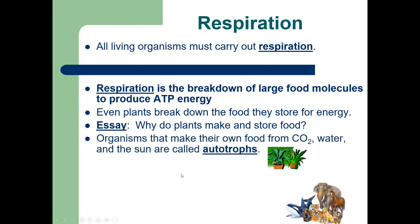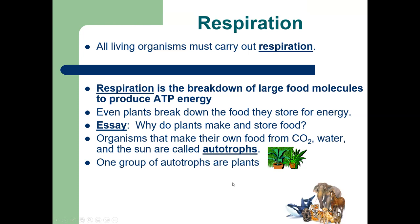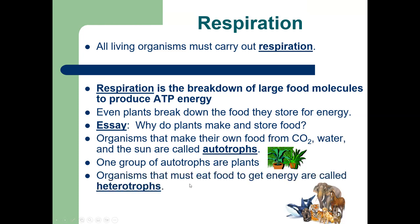Organisms that make their own food from CO2, water, and sunlight are called autotrophs. 'Auto' means self, 'troph' means feeder — they feed themselves. One group of autotrophs are plants; there are also some photosynthetic bacteria. Organisms that have to eat food to get energy are called heterotrophs — 'hetero' means other — they eat something else.